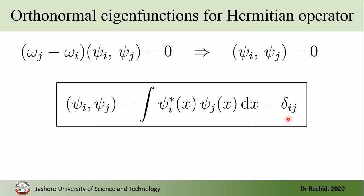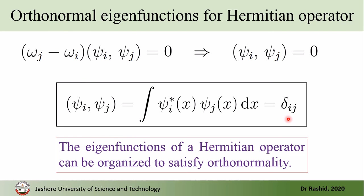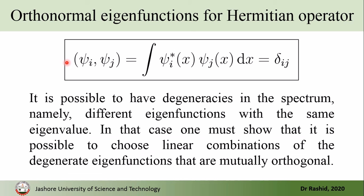We have proven that the inner product of two eigenfunctions equals the delta function: it is 1 if they are the same and 0 if they are different. So the eigenfunctions of a Hermitian operator can be organized to satisfy orthonormality. There is one caveat: if different eigenfunctions share the same eigenvalue — that is, there is degeneracy — we need to arrange those degenerate eigenfunctions so that they are mutually orthonormal.